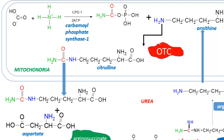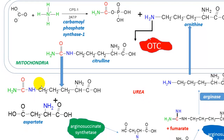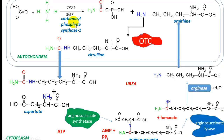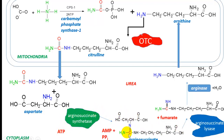Citrulline is transported out of the mitochondrial matrix through the double membrane into the cytoplasm via a solute transport carrier, completing the transition to the second phase of the urea cycle. In the cytoplasm, citrulline reacts with the amino acid aspartate. The blue NH2 from ammonium ion and the green NH2 from aspartate will together be incorporated as the nitrogens in the final excreted product, urea. High levels of aspartate drive this reaction.